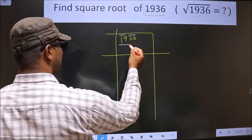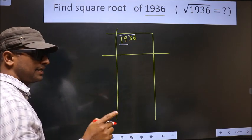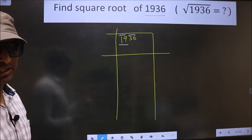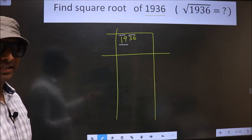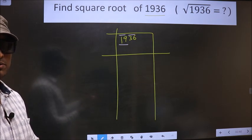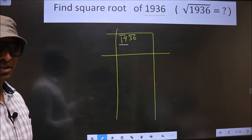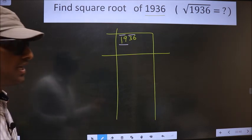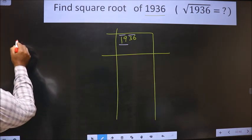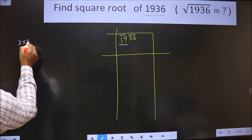Now here we have 19. 19 is not a perfect square. So now we should check 19 lies between which two perfect square numbers. And the perfect square numbers are these. That is 3 into 3, 9.